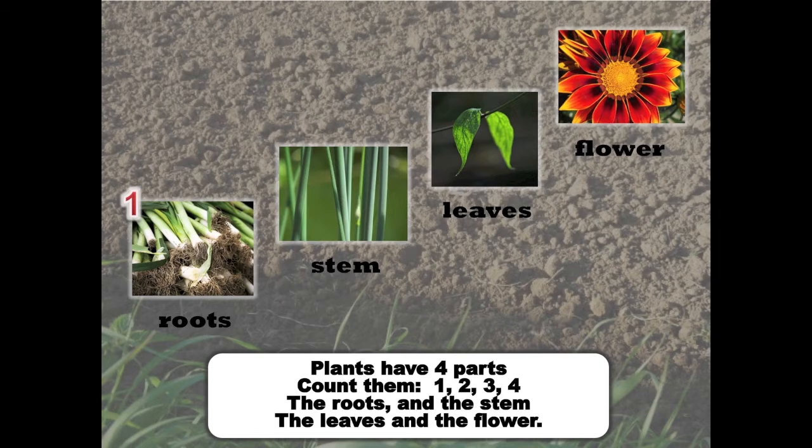Plants have four parts. Count them. One, two, three, four. The roots and the stem. The leaves and the flower.